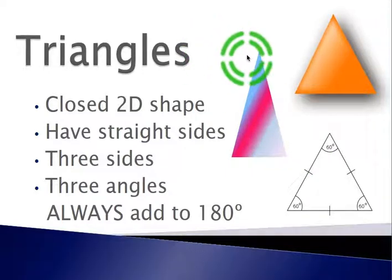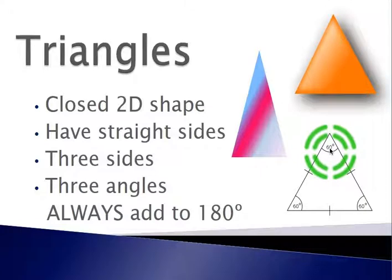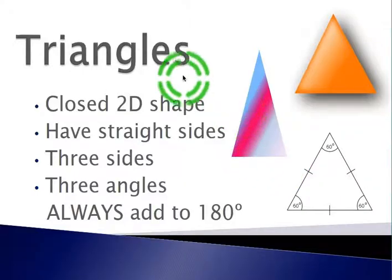It does not matter whether you have this triangle here where this angle is much smaller as compared to this angle here. They will always add up to 180 degrees, and they will always have three sides.